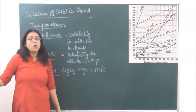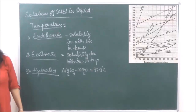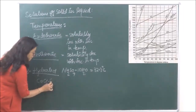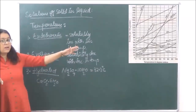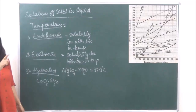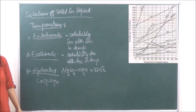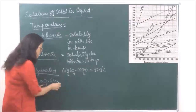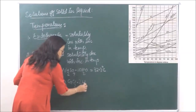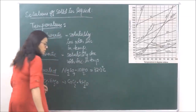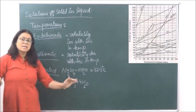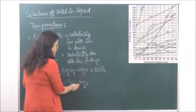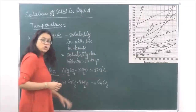For salts like calcium chloride hexahydrate, there are two maxima in the graph. In the first step, it is losing only two molecules of water to form CaCl₂·4H₂O. The solubility is increasing till it reaches this point. Then the solubility decreases a little and starts increasing again until it loses all its water molecules, after which it starts decreasing.